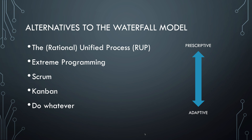In order to better deal with change, alternative development processes have evolved from the waterfall model. You can put them on a scale that indicates how well the methodology copes with change. The unified process model, also called UP or RUP — Rational Unified Process — is still pretty strict. More agile processes such as extreme programming and scrum leave more freedom to the team to adapt. And this is why agile processes have become the go-to approach for developing software. Computer science is still a young field, so at some point there will probably be a successor to agile that everybody flocks to.